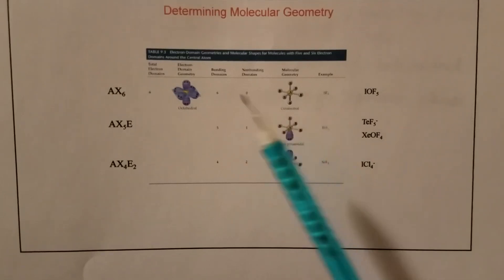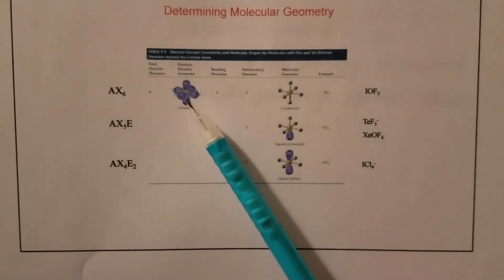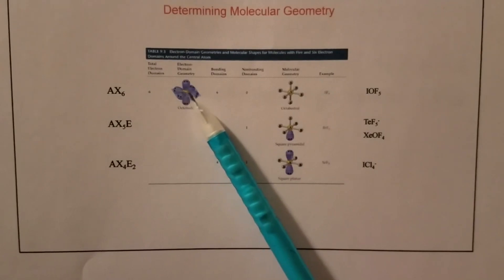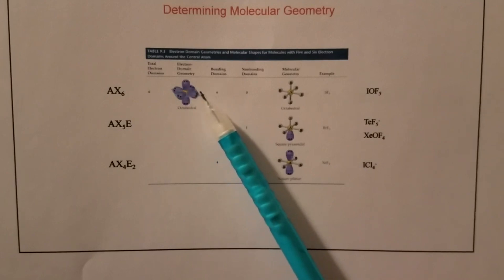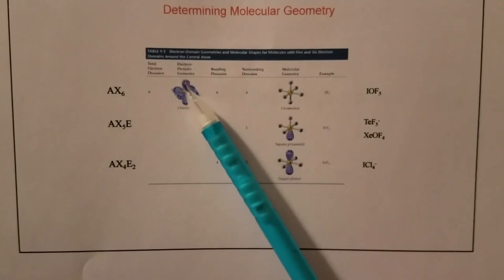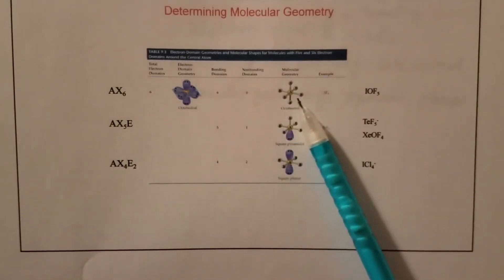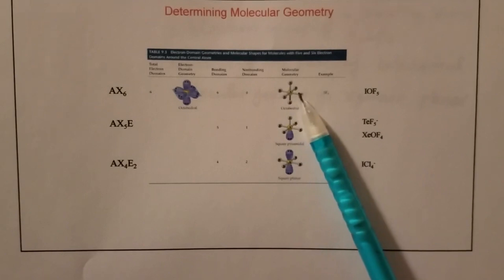If you forgot what the octahedral looks like, this is the octahedral. This is the axial position, and those four are in the equatorial positions. Or you may say the axial are the vertical ones, and the equatorial are in the horizontal plane. Octahedral has a total of six electron groups.